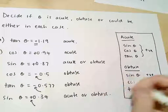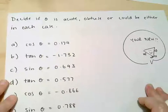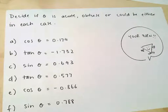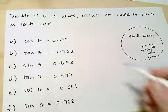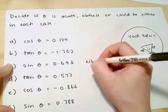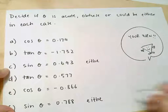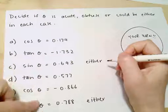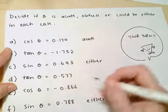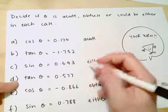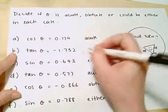I'm going to give you a few moments to have a go at this question yourself — decide in each case if theta is acute, obtuse, or could be either. When sin is positive, it could be either. Cos theta positive means acute; cos theta negative means obtuse. Tan theta positive means acute; tan theta negative means obtuse. Hopefully you got those right — if not, go back and re-watch that part of the video.